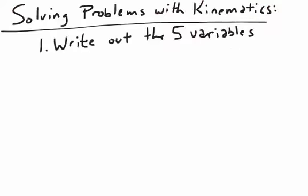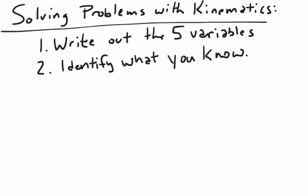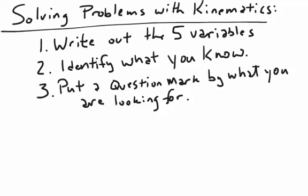When solving problems with kinematics, the first thing we do is write out the five variables: v0, v, a, d, t. Next, we identify what we know, write them out, and include the units. Then we put a question mark by what you're looking for.